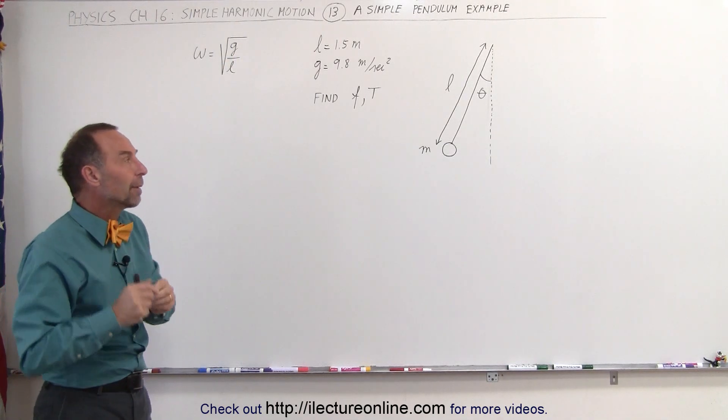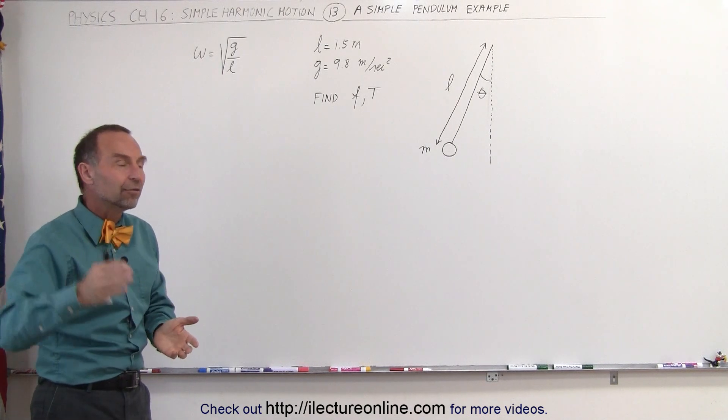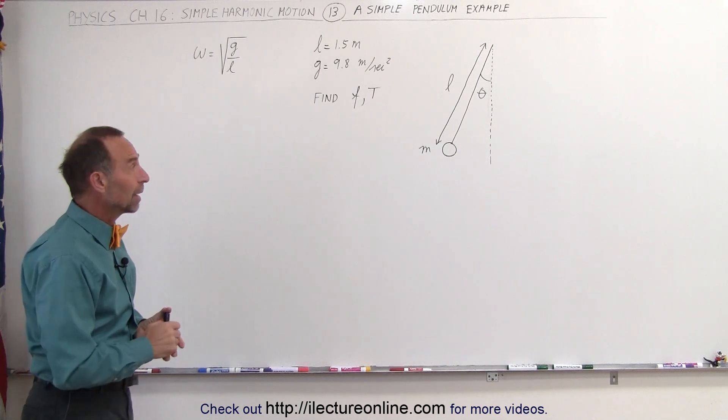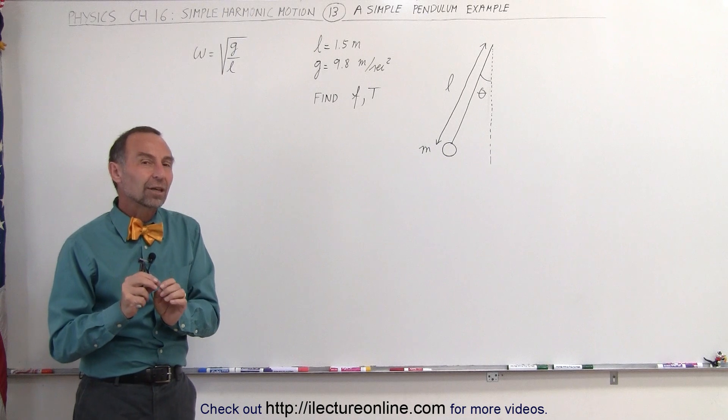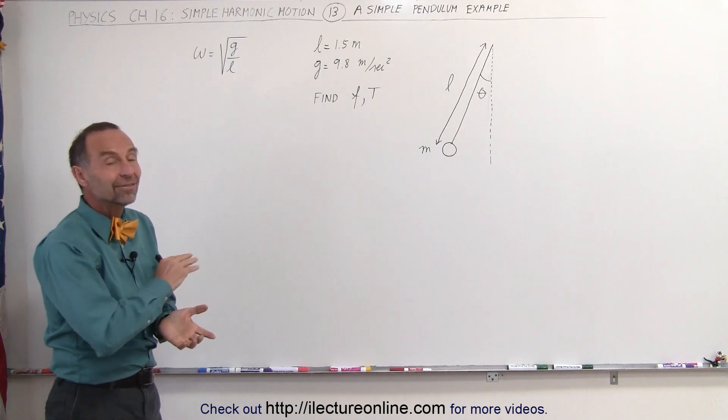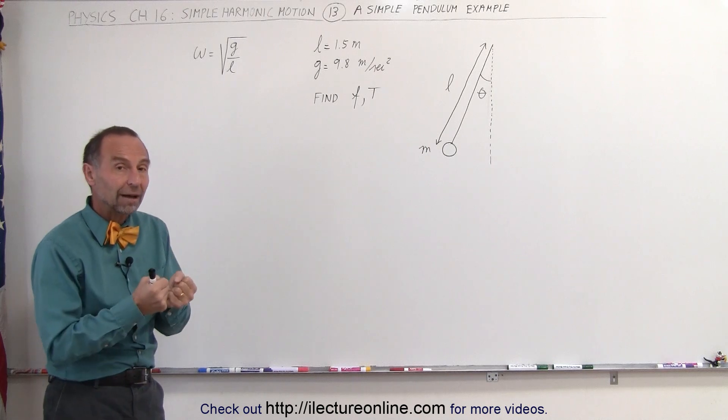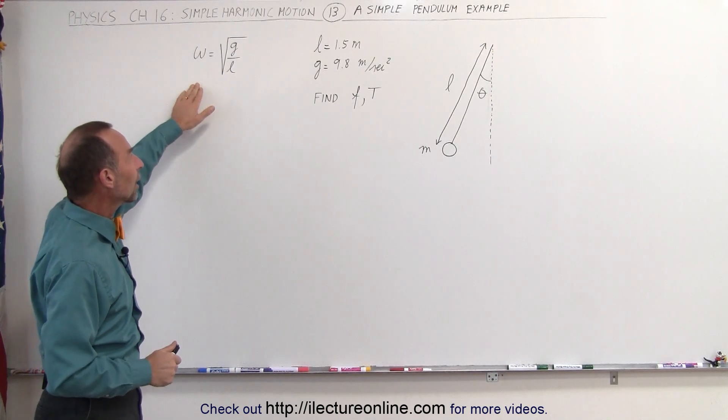It also depends on the length of the pendulum. The longer the pendulum, the slower the motion of the pendulum, or the longer the period of oscillation might be a better way to express it. Notice that the frequency, or therefore the period, has nothing to do with the mass of the pendulum. It's simply related to the force of gravity and the length of the pendulum. Let's go ahead now and solve this problem.